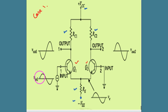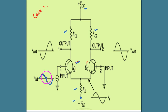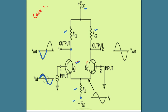Now let the input signal be applied to the base of Q1. In this case, Q1 serves as both a common emitter and common collector configuration. If the input is at the base and the output is taken at the collector, this is common emitter configuration, and there is a phase reversal — a positive cycle at input gives a negative cycle at output.